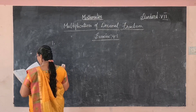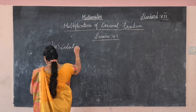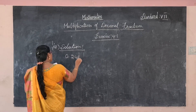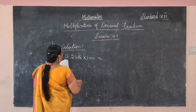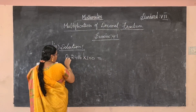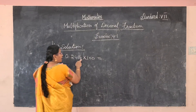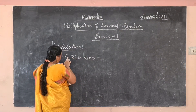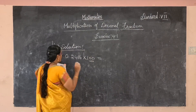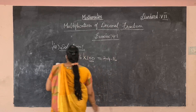Find the product of the following. Problem E: 0.2416 multiplied by 100. How many zeros? Two zeros. The decimal point shifts to the right side by two decimal places: one, two. The answer is 24.16.